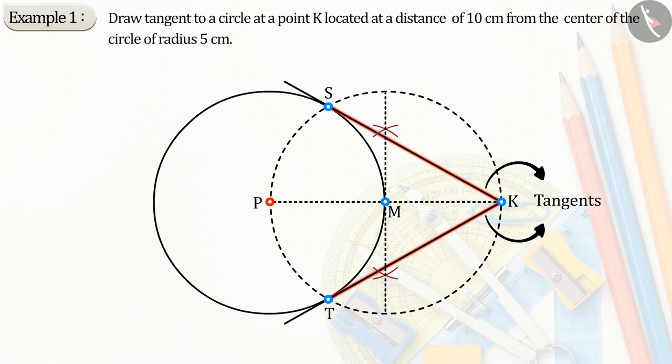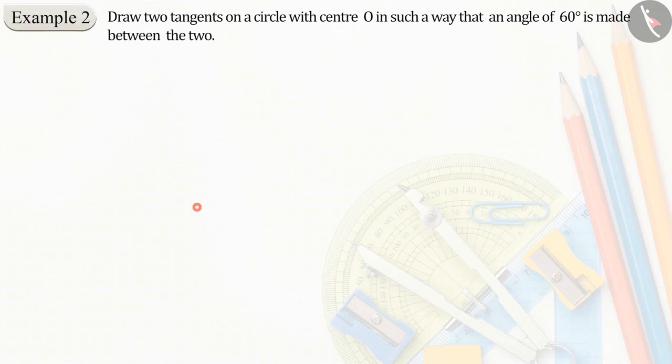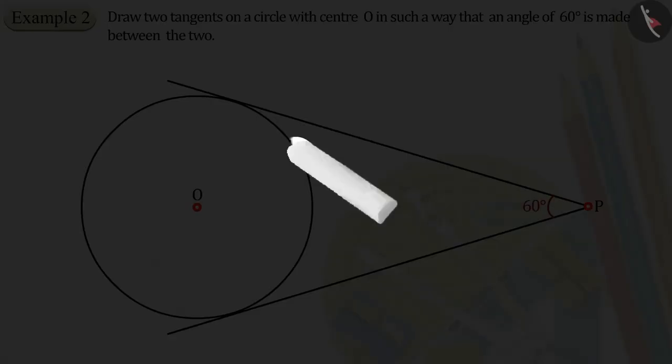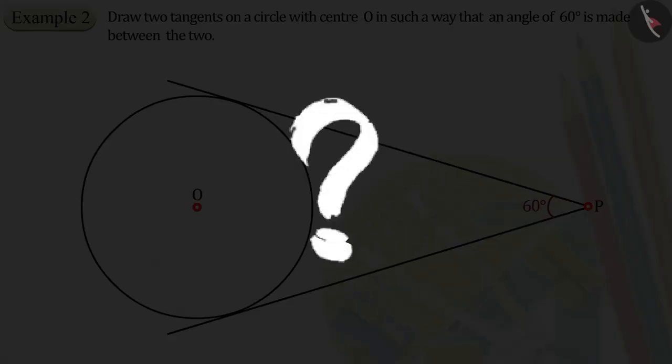Let us see another example based on the tangent lines of a circle. Draw two tangent lines on a circle with center O in such a way that an angle of 60 degrees is made between the two. Can you tell what is different in this question?